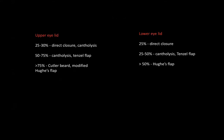For the upper eyelid: 25–30% is direct closure or cantholysis; 50–75% is cantholysis or a Tenzel flap; more than 75% is a Cutler-Beard flap or a modified Hughes flap. For the lower eyelid: 25% is direct closure; 25–50% is cantholysis or Tenzel flap; more than 50–70% we use a Hughes flap.